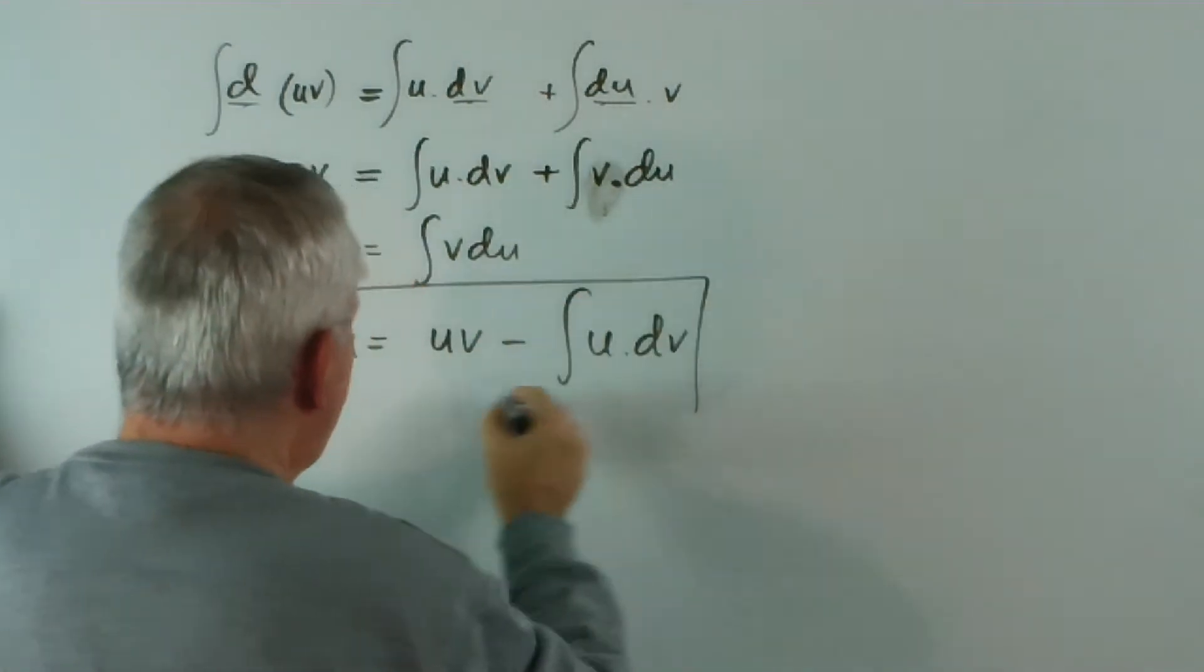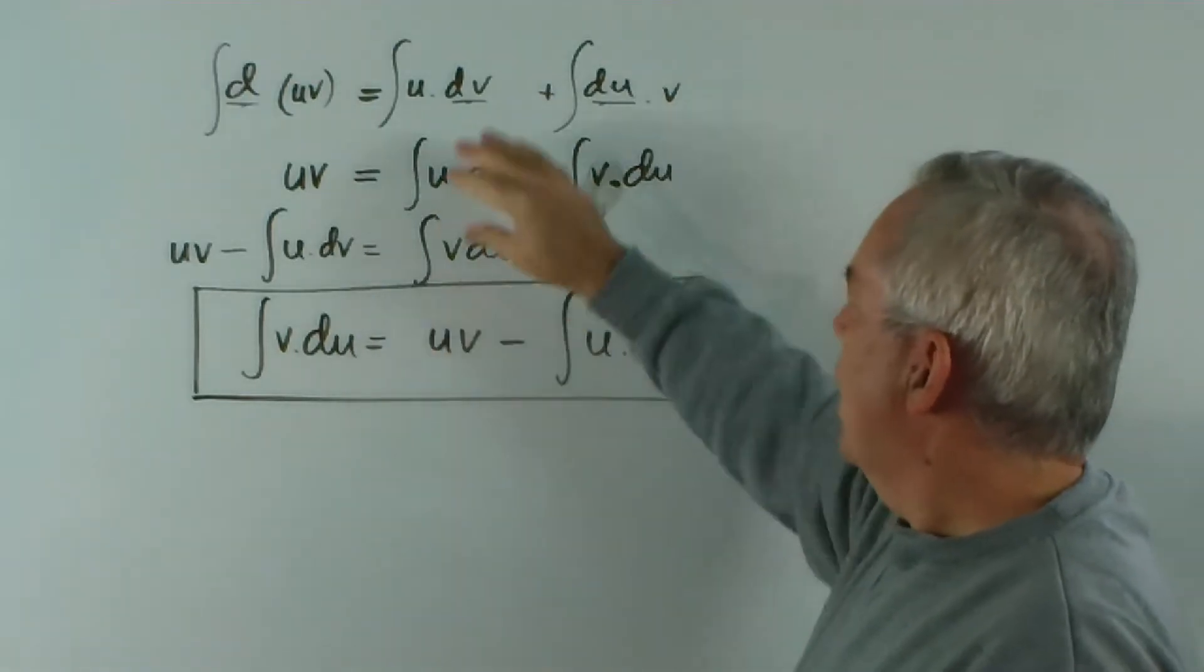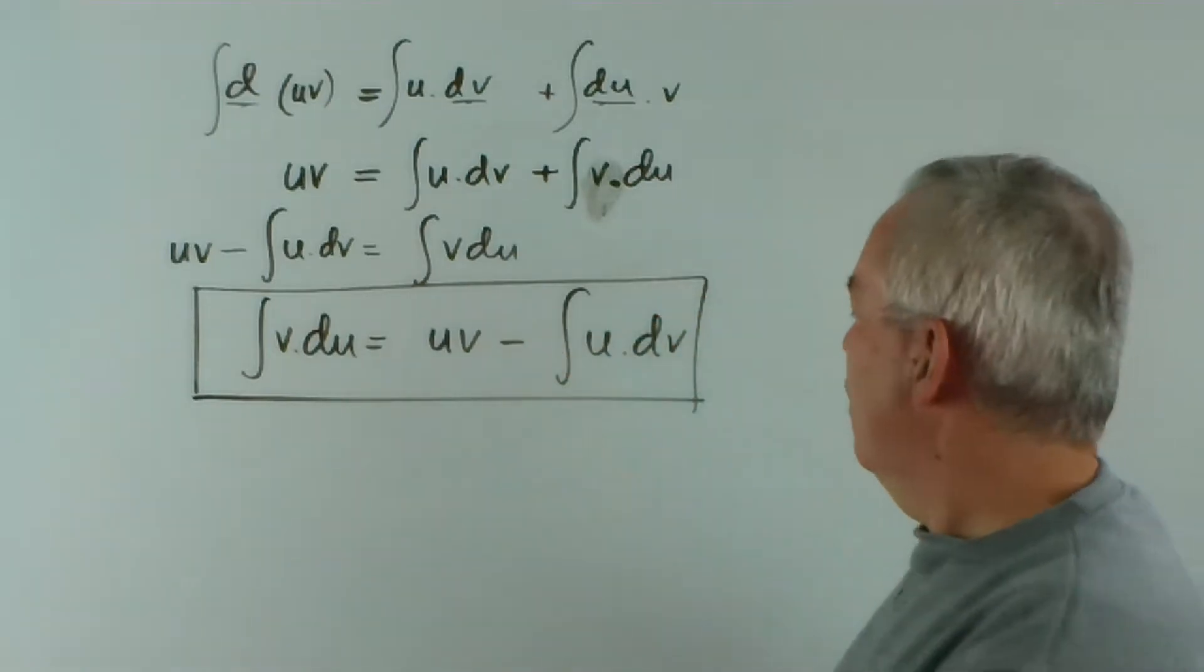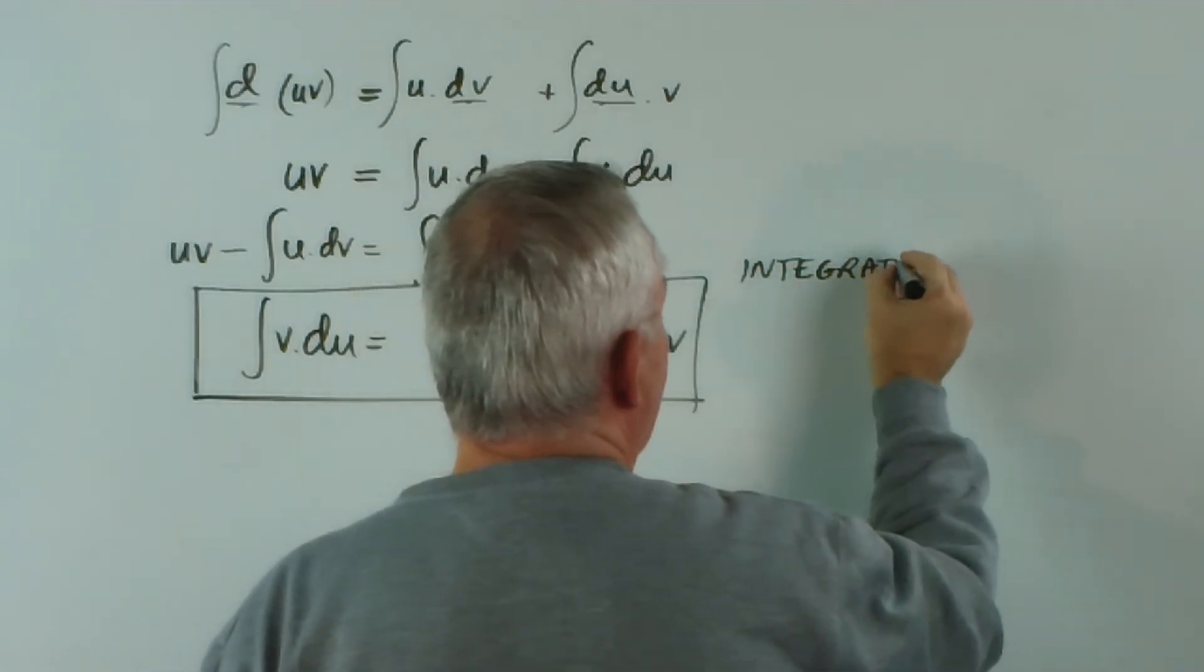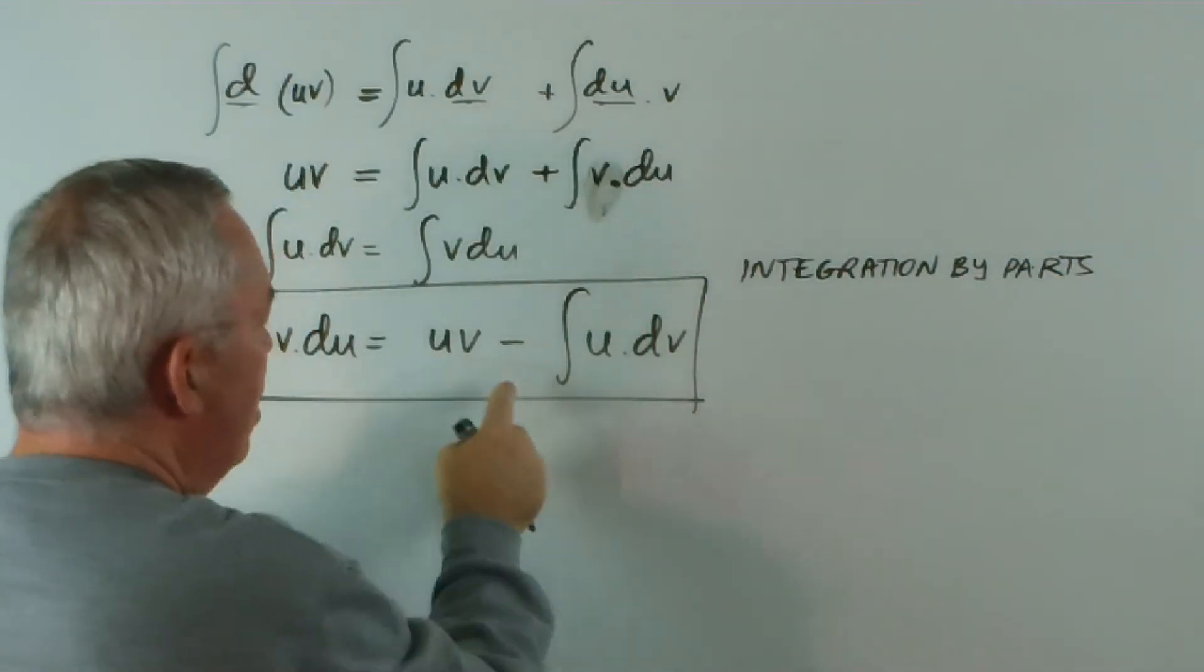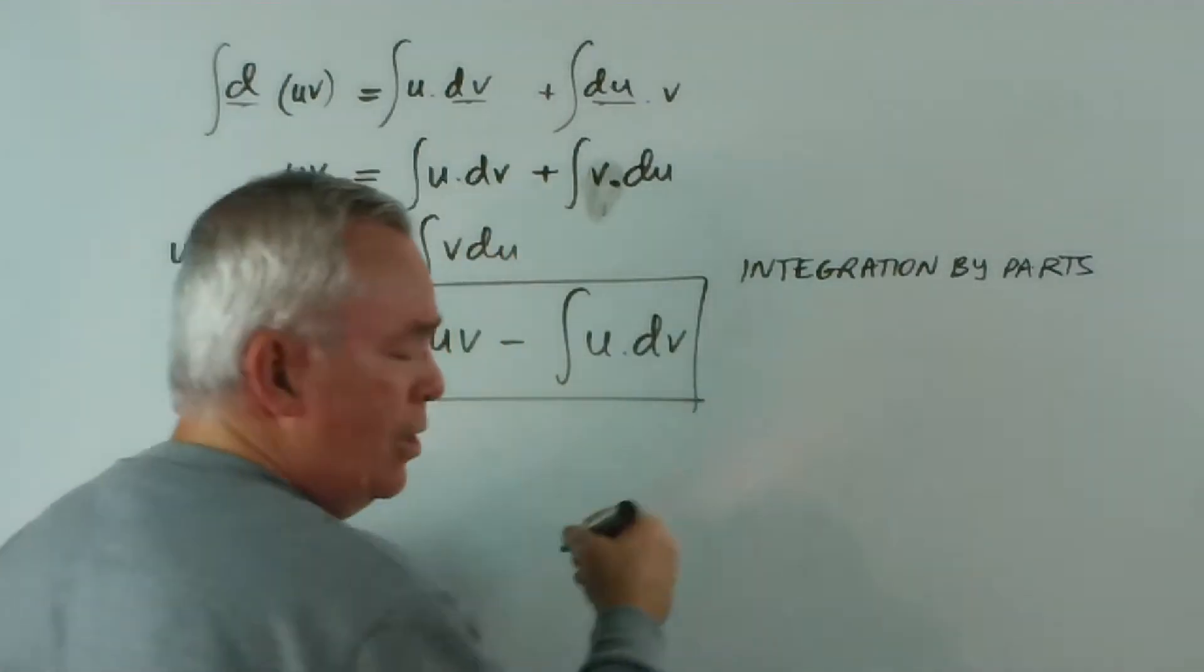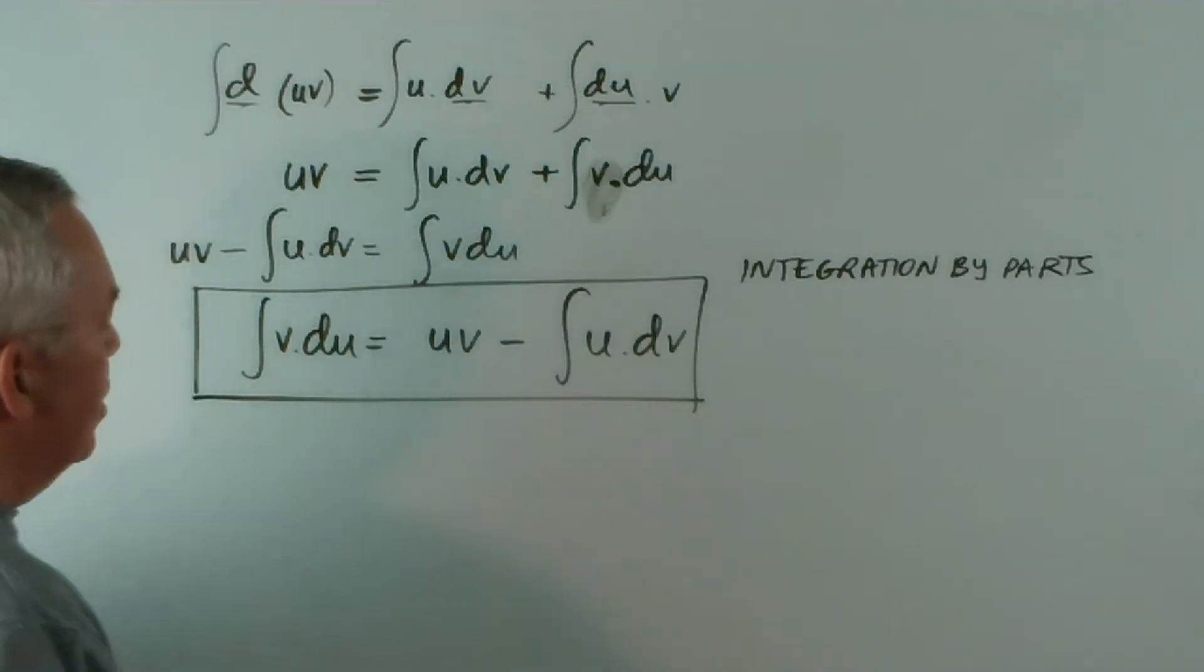This is the form of integration that derives from the product rule when we differentiate. So, if we use the product rule differentiating, we use this rule to integrate. And this rule is not called the product rule. It's called integration by parts, simply because the u and the v are different parts of the expression. But why is it so useful?